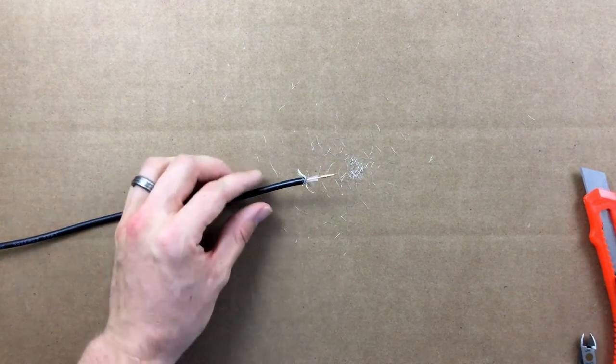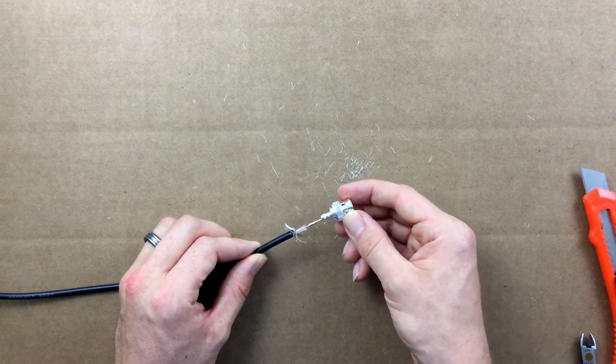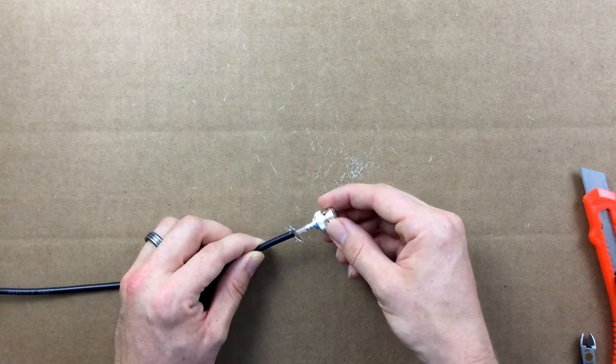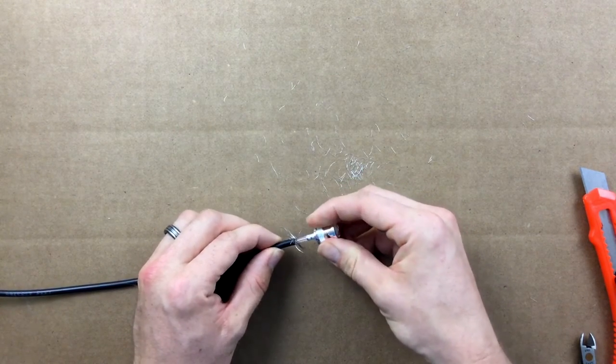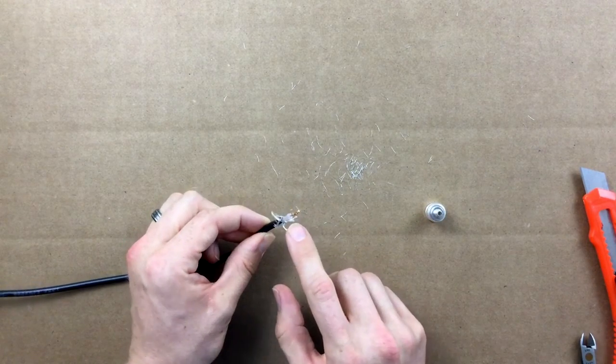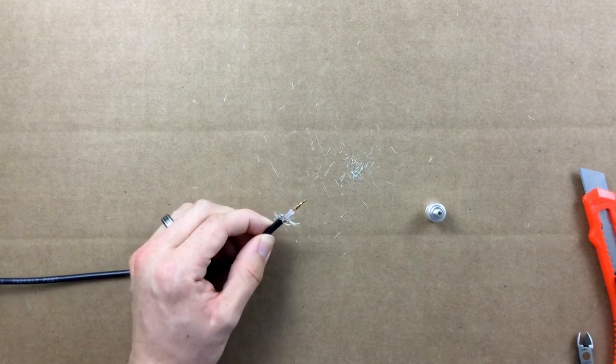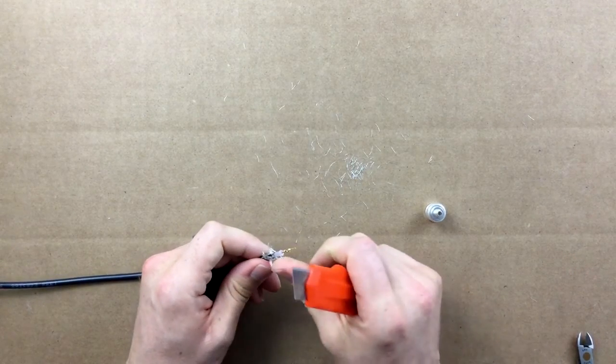Grab the BNC male main body and rotate clockwise while inserting the coax through the bottom of the connector. Because the dielectric was not Teflon, it expanded when heated. We will need to shrink this in order to get our connector to fully seat onto the coax.